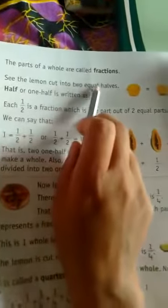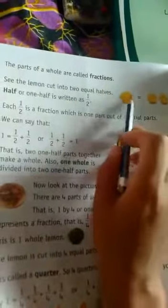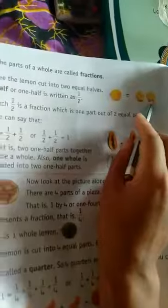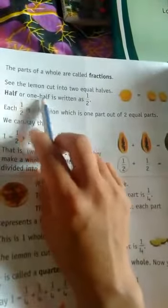The parts of a whole are called fractions. See the lemon cut into two equal halves. So half or one-half is written as one by two.